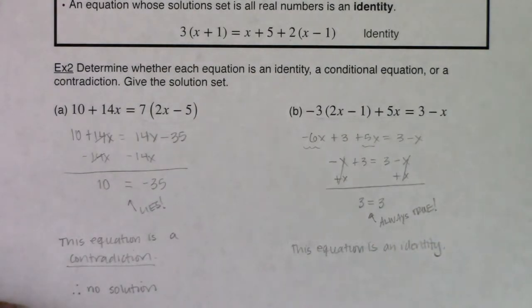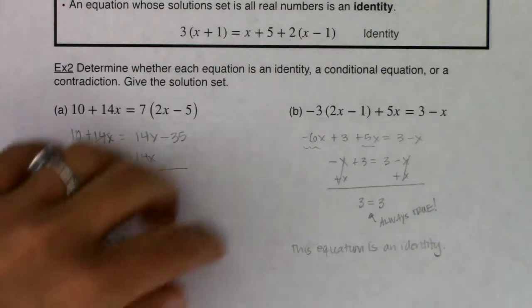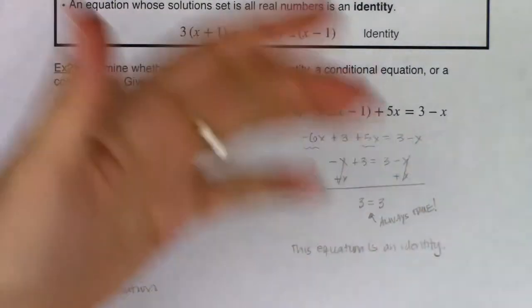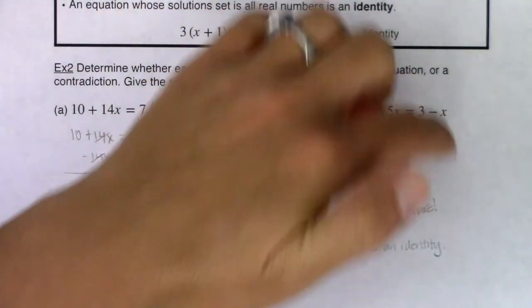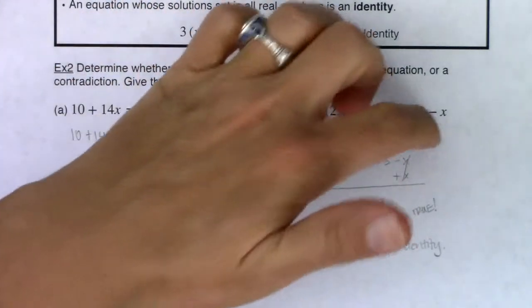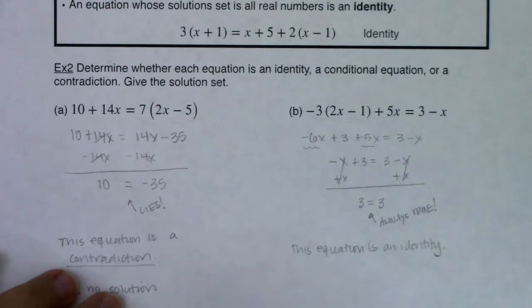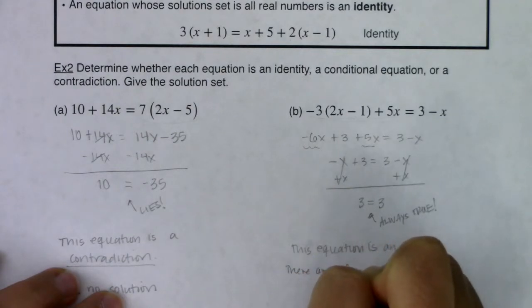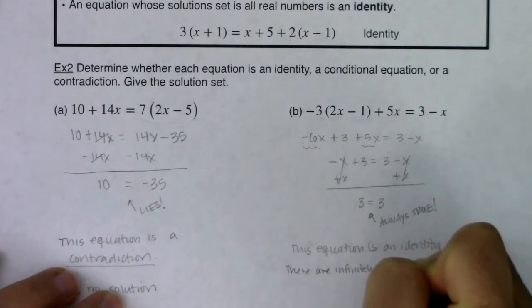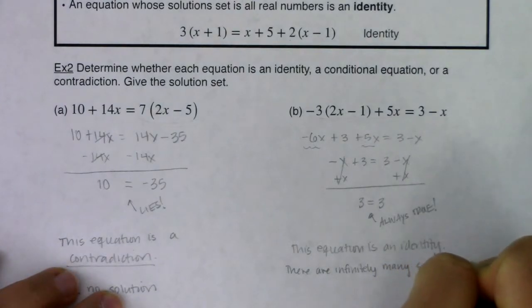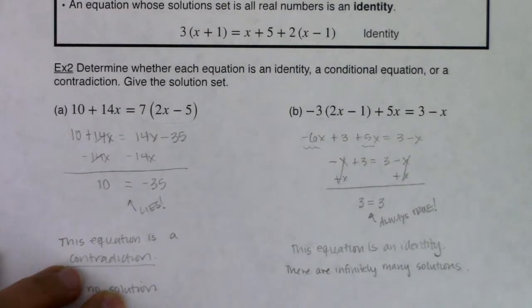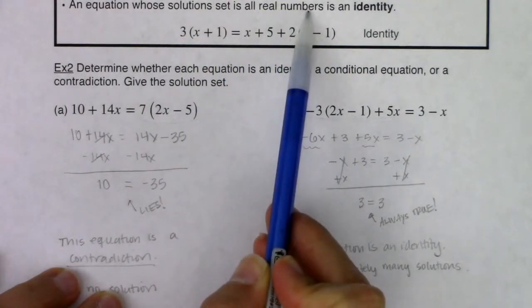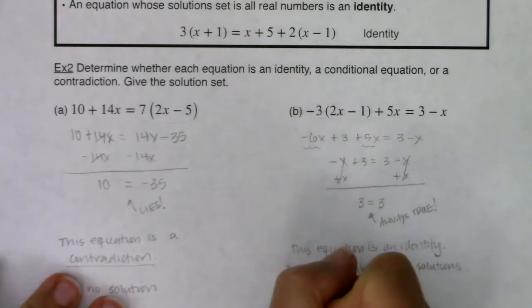Because 3 = 3 is always true no matter what value of x you add to both sides, there are infinitely many solutions. Plug in zero — equality holds. Plug in 72 — equality holds. Plug in negative 5/3 — equality holds. The solution set is all real numbers, and an equation whose solution set is all real numbers is an identity.